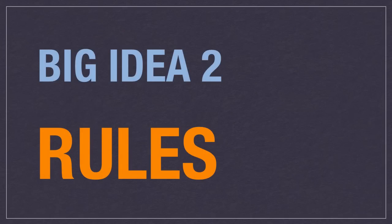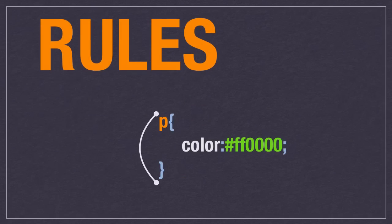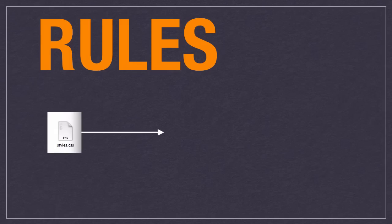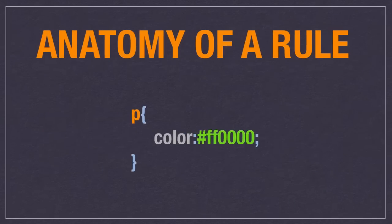The second big idea is rules, and rules are essentially what CSS is about. This is an example of a rule — the whole thing is a rule. When we talk about that styles.css file, it's really just a file that is a set of rules. The computer will go through and apply those rules to any page that CSS file is associated with. So in that link tag, when you associate the CSS, it tells the computer to go out, look at those rules, and apply them to all the markup on the page.